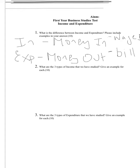Question two asks: what are the three types of income that we have studied? Well, the first one is regular income, and this basically is income you receive all the time. That could be something like a wage or a salary — you can count on it, you know it's coming.